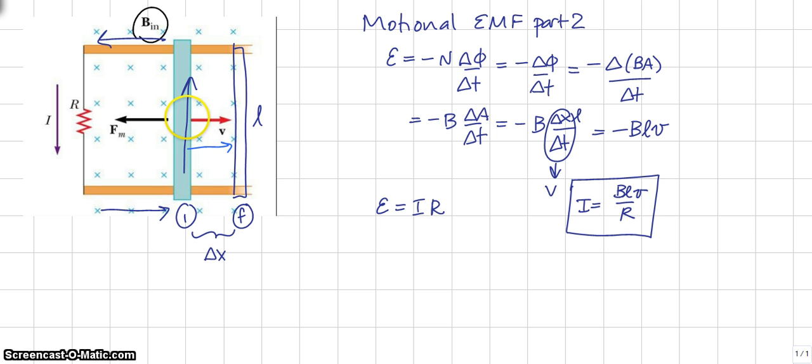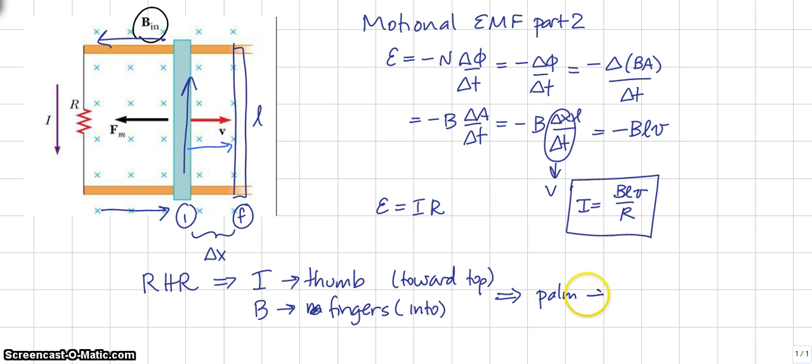So, I now have a current bar, a bar with current, moving through the magnetic field directed into the page. So, according to the right-hand rule, I now have a current, which is my thumb. So, put your thumb toward the top of the page. Point your fingers in the direction of the magnetic field, which is into the page. So, this is toward the top. And the fingers go into the page. And when you do that, you will notice that your palm of your right hand faces to the left.